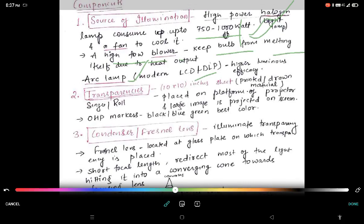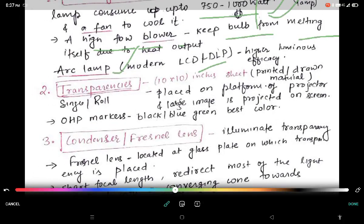Transparencies. Transparencies are 10 by 10 inches. It may be in printed or drawn material which may be single or roll form that is placed on the platform of projector which enlarges the image on the screen. OHP markers can be used on the transparencies if they like to.